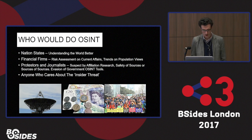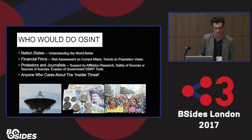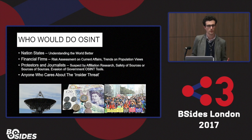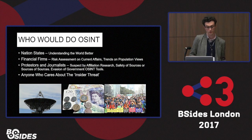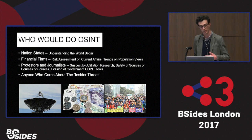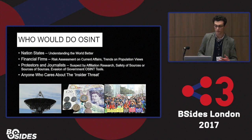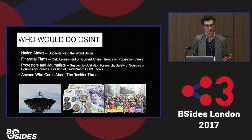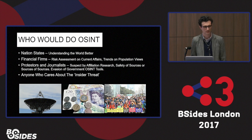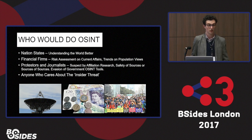Who would do open source intelligence? Well, nation states obviously. Financial firms obviously — they want to look at current affairs and what people believe. Also protesters and journalists want to make sure they evade government OSINT tools and that their sources are safe from being tracked. And businesses that care about the insider threat. So it could be anyone.